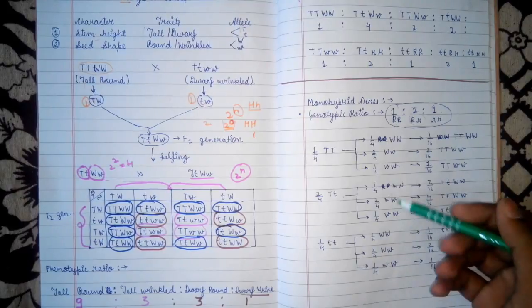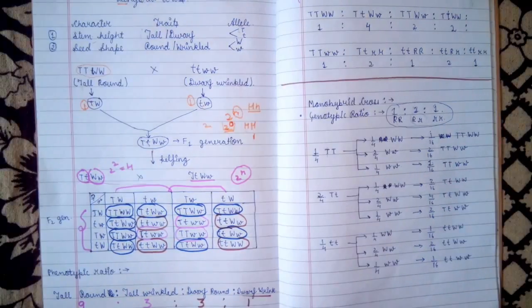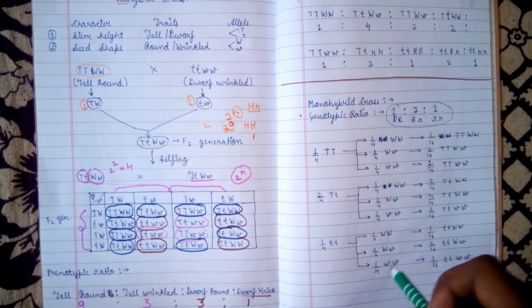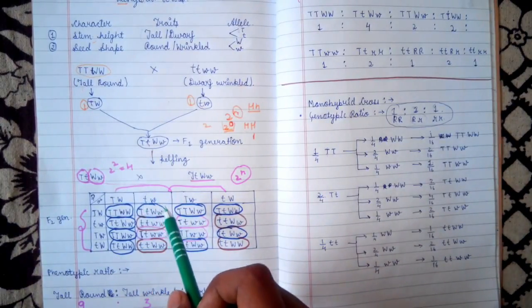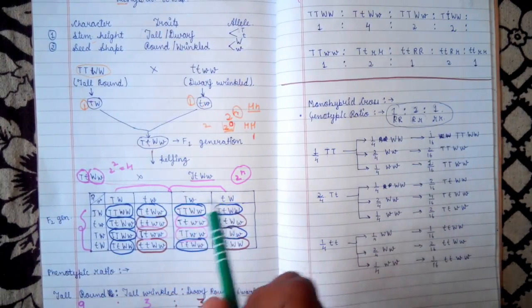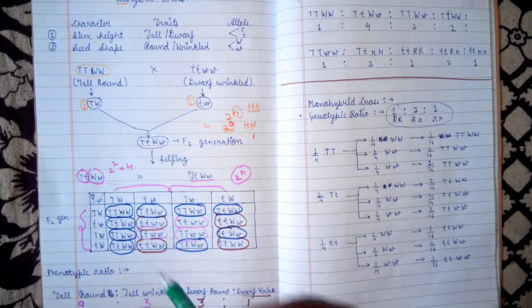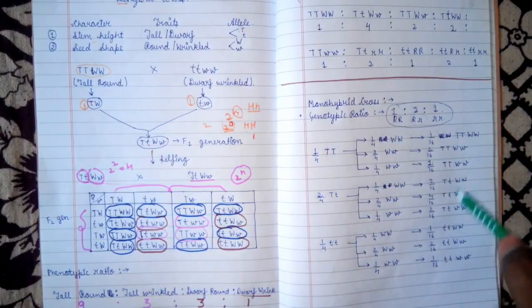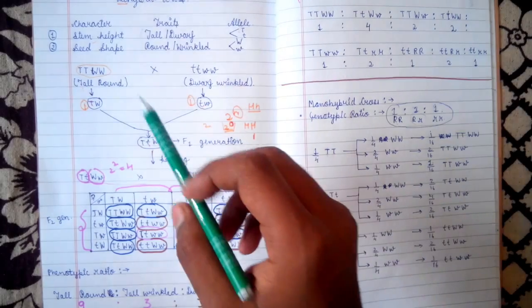This formula is especially helpful in the NEET and AIIMS exams because in those exams our main focus is to solve more questions in less time. If you solve using this shortcut, you will take less time compared to the traditional method. During exams, time is very precious, so you should use this shortcut trick for finding the genotypic ratio of the dihybrid cross.